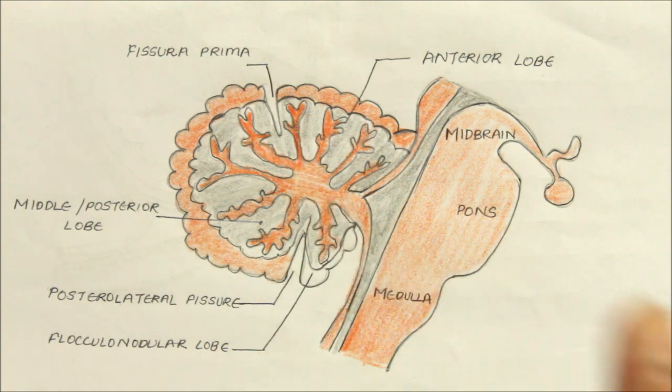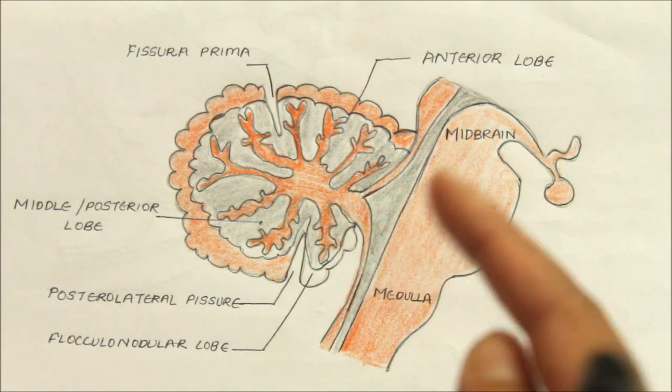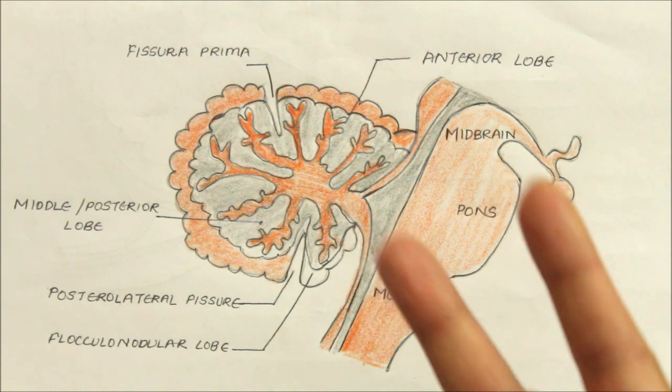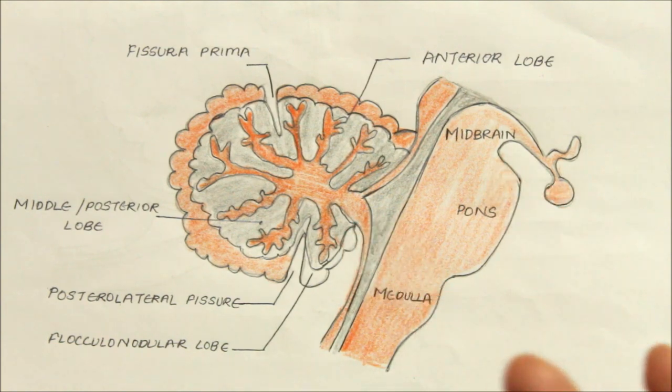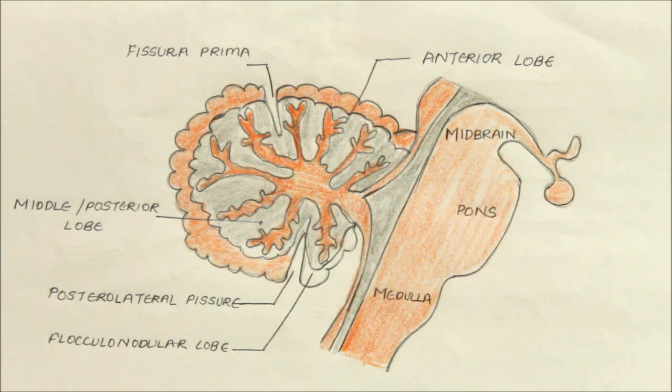The cerebellum has three main functions: first, maintaining the tone of muscles; second, balance; and third, coordination.